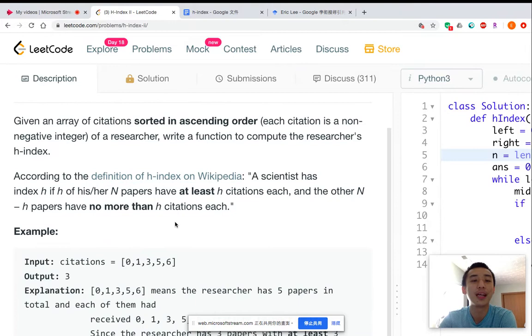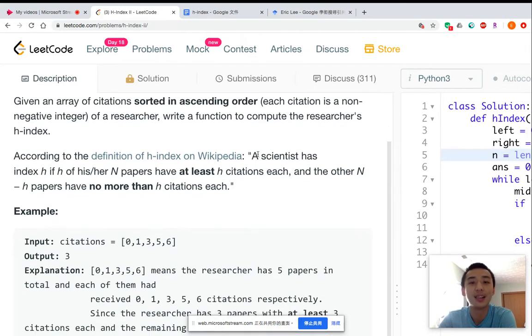In this problem we want to calculate the H-index for a scientist. What is the H-index? H-index means a scientist has index H if each of his or her N papers have at least H citations each, and the other minor H papers have no more than H citations each.